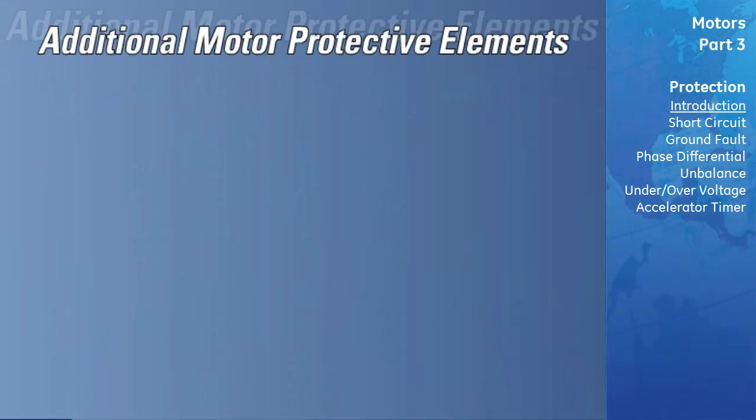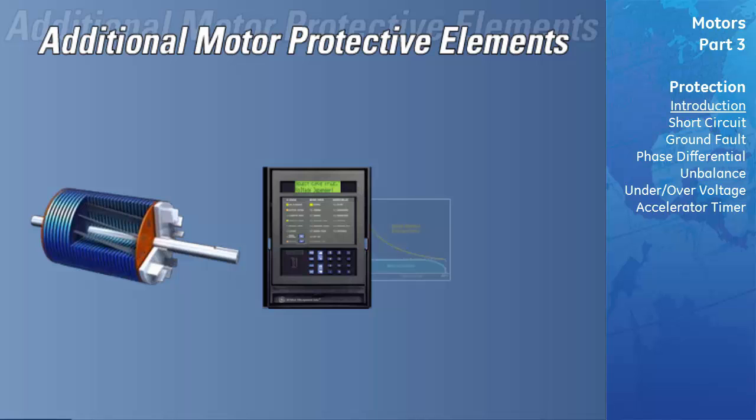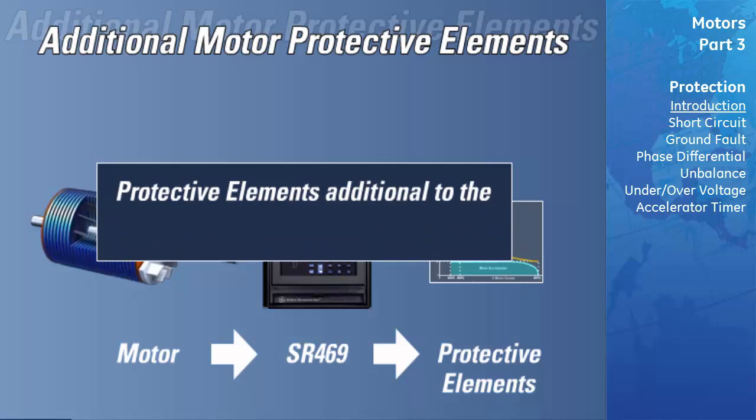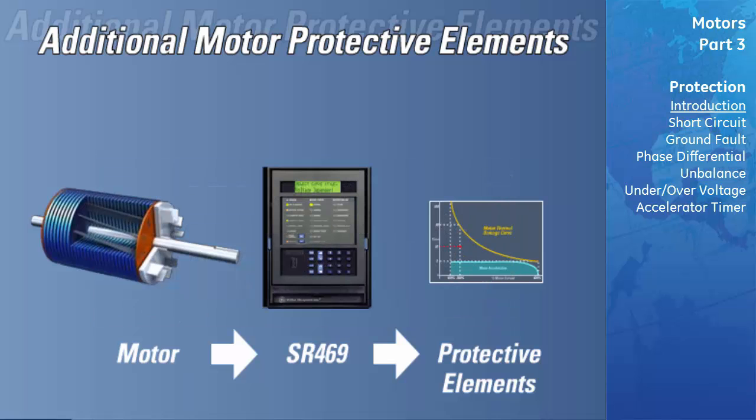Additional induction motor protective elements. Having a clear understanding of the motor thermal model and how to properly set its components provides us with a good start to the process of protecting an induction motor. There are, however, a few additional protective elements which we will examine. Some of these elements, such as instantaneous overcurrent element, are required to provide adequate protection for an induction motor, while others, such as jam detection, are popular options which may enhance the overall protection scheme.